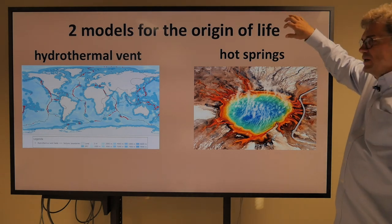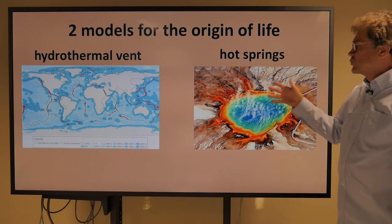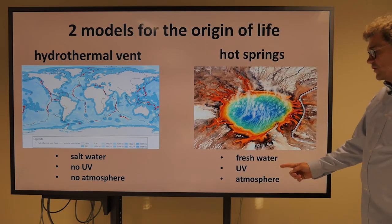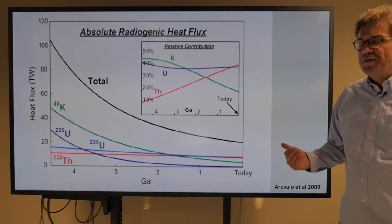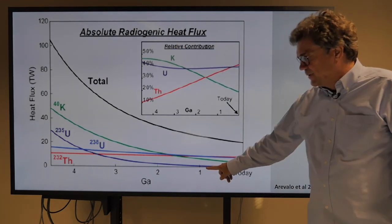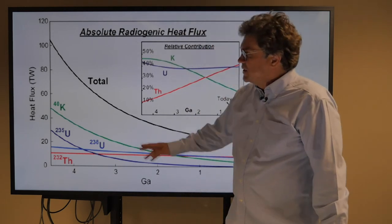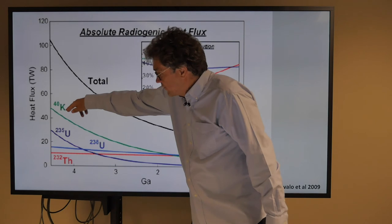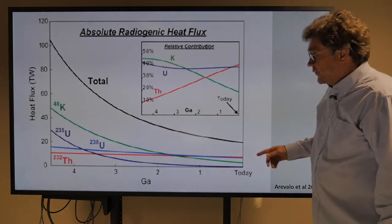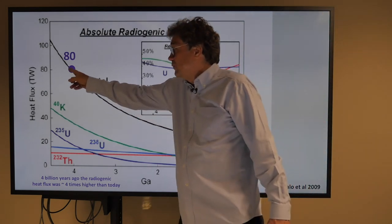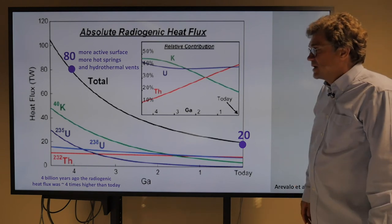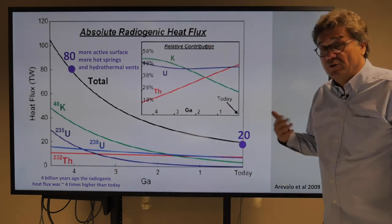So, there are two models for the origin of life: hydrothermal vents at the bottom of the ocean — salt water, no UV, no atmosphere — versus hot springs at the surface — fresh water, UV, and an atmosphere. Four billion years ago, there was also much more radiogenic heat flux from potassium-40, uranium-235, uranium-238, and thorium-232. Back then, the total heat flux was about four times what it is today, meaning more hot springs and hydrothermal vents were active. There was also more accretion energy back then.